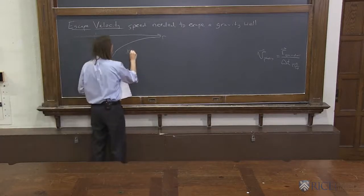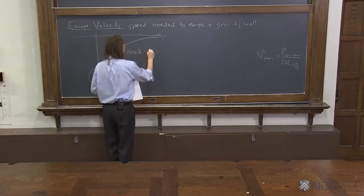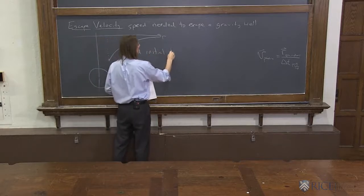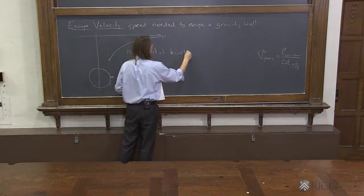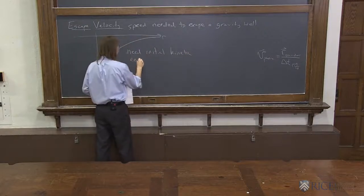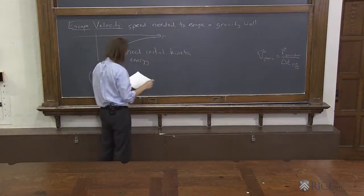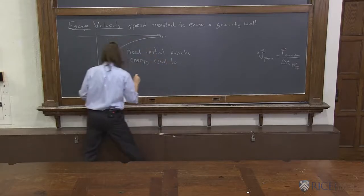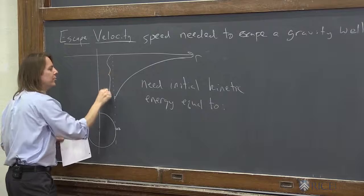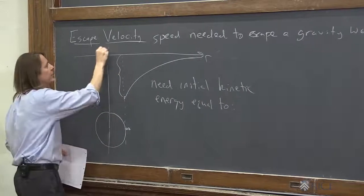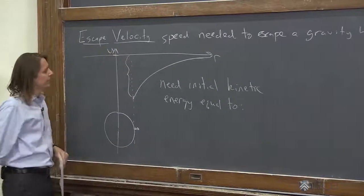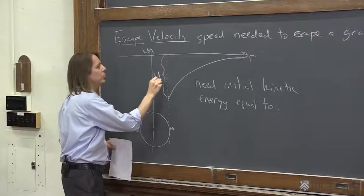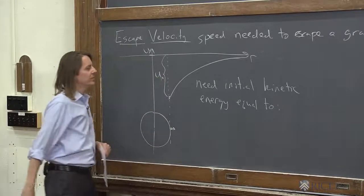So we need an initial kinetic energy equal to what? To this potential energy right here. So this is U, by the way, and there's zero. So this is the U, I'll put E, U escape that we need.